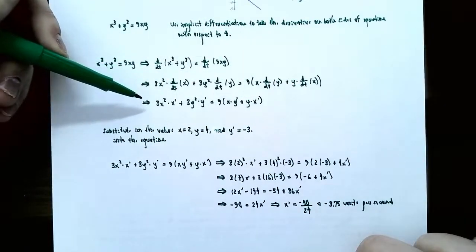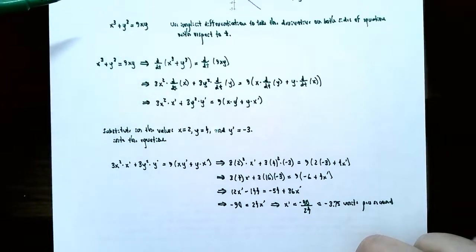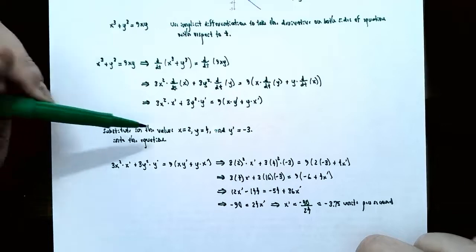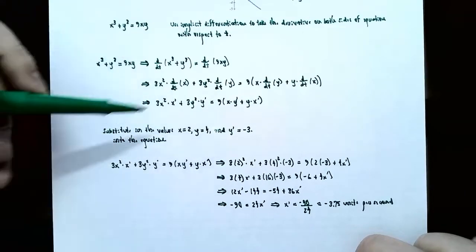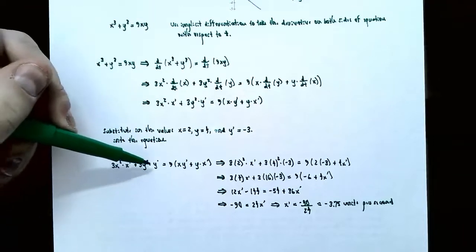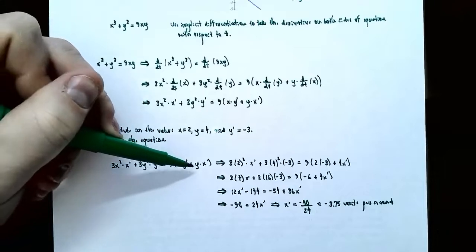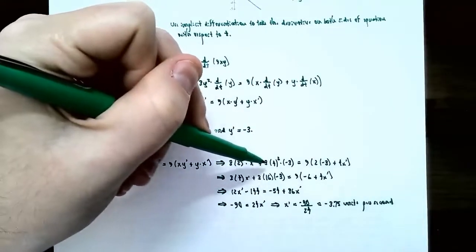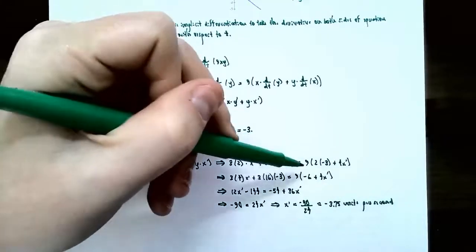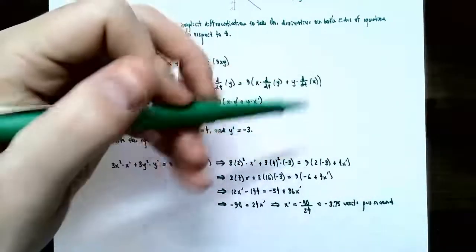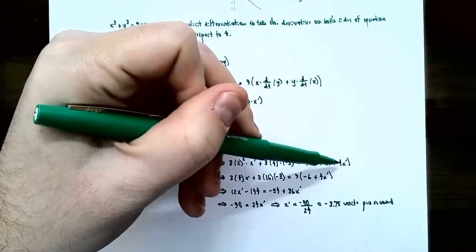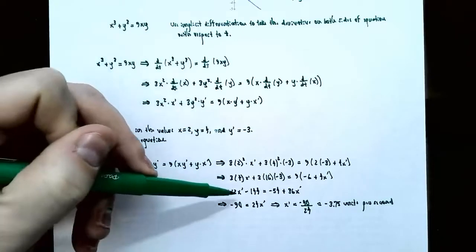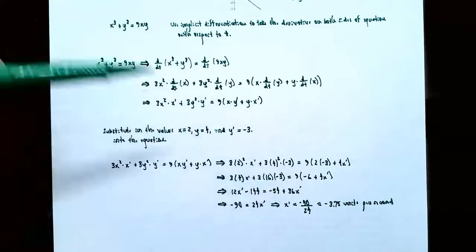Now substitute x equals 2, y equals 4, and y prime equals negative 3 into the differentiated equation. On the left: 3 times 2 squared times x prime plus 3 times 4 squared times negative 3, which gives 12 x prime minus 144. On the right: 9 times open parenthesis 2 times negative 3 plus 4 times x prime close parenthesis, which gives negative 54 plus 36 x prime. So we have 12 x prime minus 144 equals negative 54 plus 36 x prime.